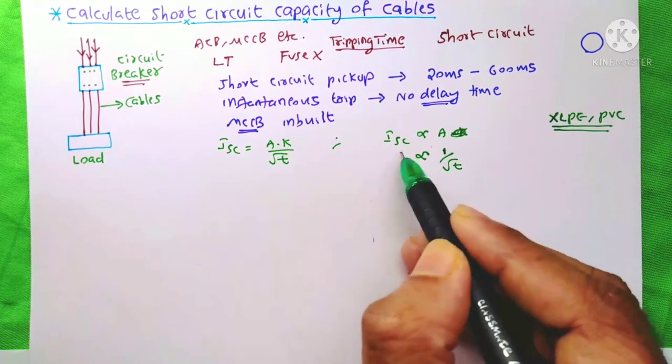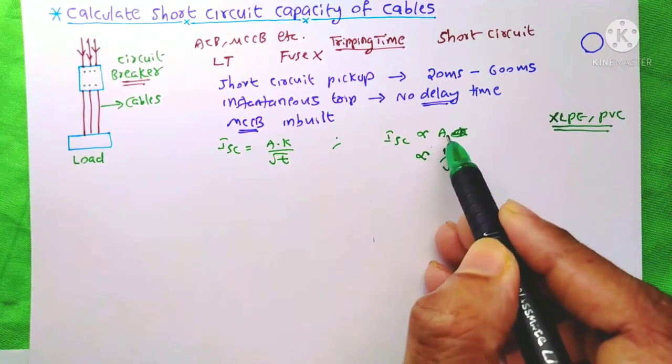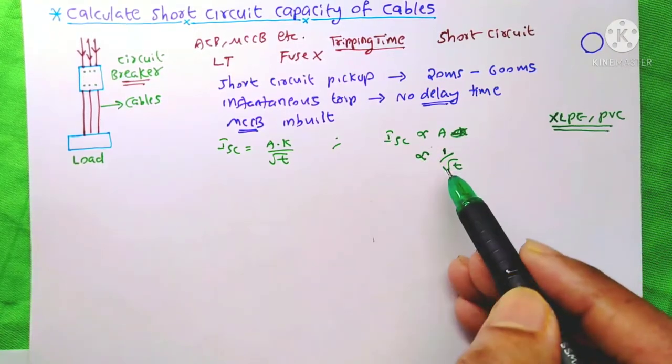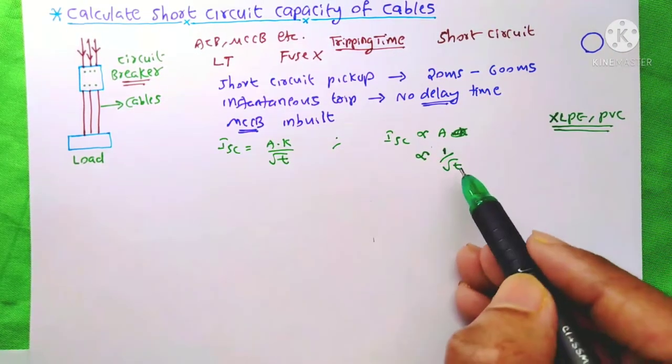This short circuit current is directly proportional to the area of the cable. It means when area increases, short circuit also increases. But it's inversely proportional to tripping time.